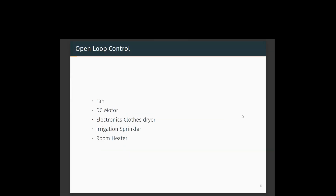There are generally two types of systems: open loop and closed loop. Examples of an open loop system include a fan, DC motor, electronic clothes dryer, irrigation sprinkler, and a room heater. It is called an open loop system because there is no feedback of the output variable that is used to control, change, or modify something within the system.